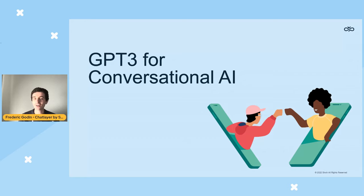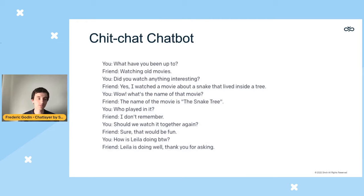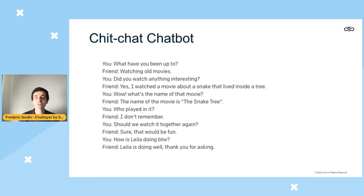Most of us are also interested in what GPT-3 means for chatbots and conversational AI. There are actually two types of chatbots to consider: chit-chat chatbots, where you talk about common subjects like with a friend, and task-oriented chatbots — the ones most of our customers have built on Chat Layer — which help users fulfill a specific task like buying something or reporting a problem.